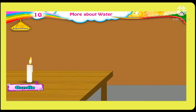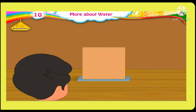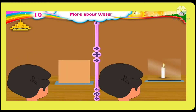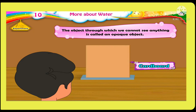Now let's do a different experiment. Place a lighted candle on a table. Try to see through a piece of cardboard. Can you see the candle? No, we cannot see the candle. Now see the same candle through glass. We can see the candle. From this, we can conclude we cannot see things through cardboard, but we can see things through glass. An object is called transparent when we can see through it — for example, glass. An object through which we cannot see anything is called an opaque object — for example, cardboard.